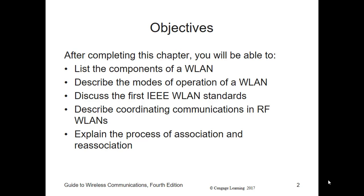Practically all laptop computers, tablets, and smartphones are equipped with Wi-Fi today. Coffee shops, restaurants, hotels, planes, trains, and automobiles now offer Wi-Fi internet access. In this lesson, we're going to review the basic concepts of how Wi-Fi wireless LANs work, focusing on low-speed wireless LANs up to 11 Mbps. This background knowledge will help you better understand high-speed technologies and new standards in our next lesson.